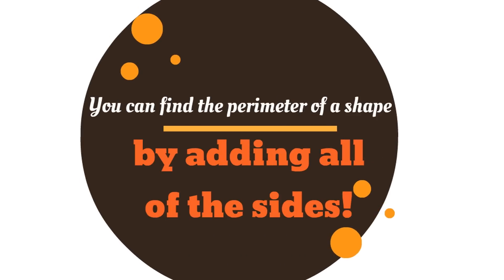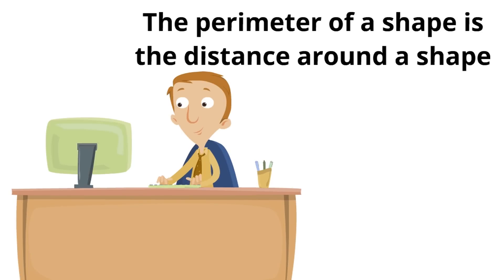Remember, you can find the perimeter of a shape by adding all of the sides. And the perimeter of a shape is the distance around a shape.